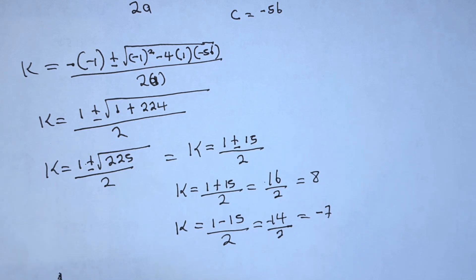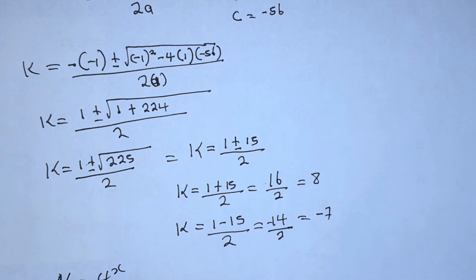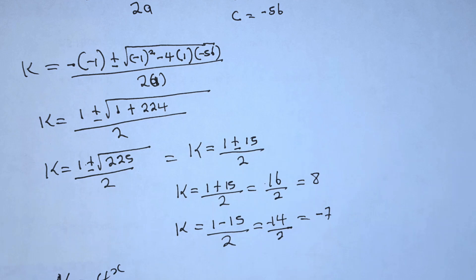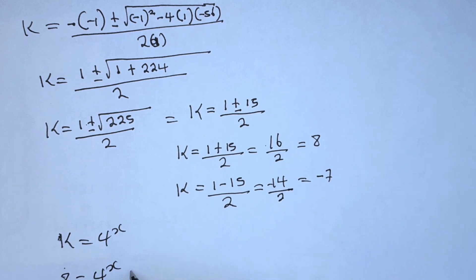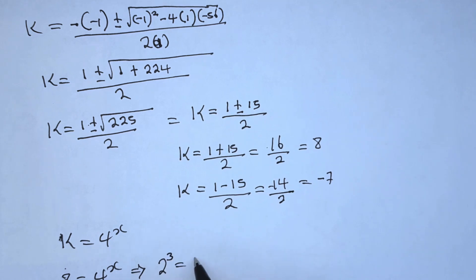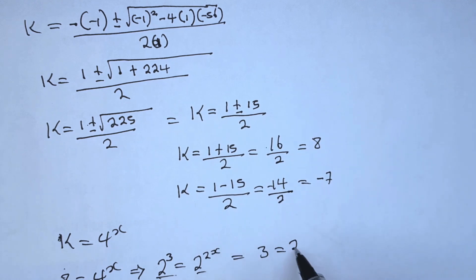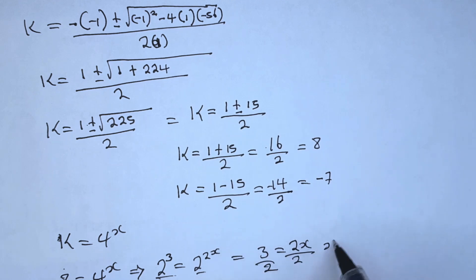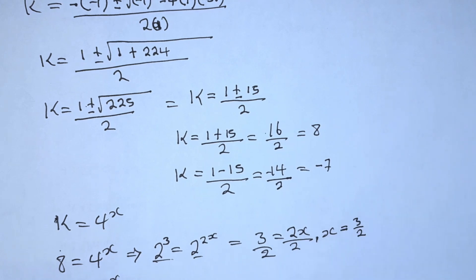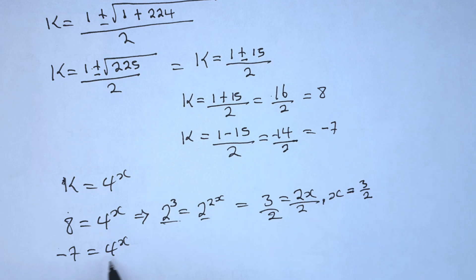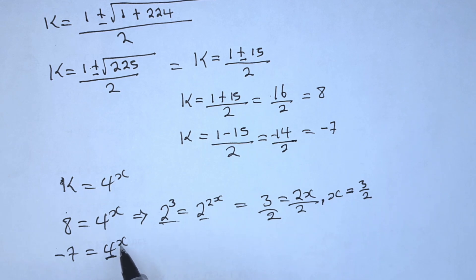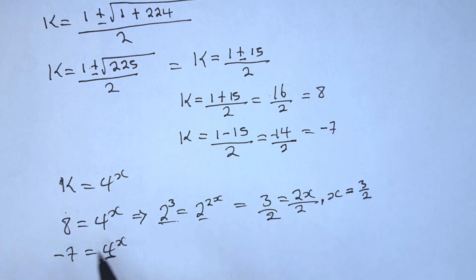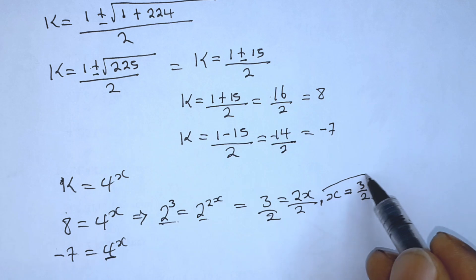Remember we let k equal 4 to the power of x. Substituting the first value: 8 equals 4^x, that is 2 cubed equals 2 to the power of 2x. Since we have the same base, we equate the exponents: 3 equals 2x, so x equals 3 over 2. For the second value, negative 7 equals 4^x — since 4 is a positive base, it can never equal a negative number, so we reject this. Therefore our only solution is x equals 3 over 2.